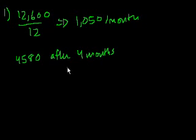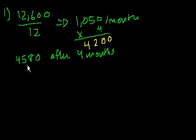By how much was the project over its budget? Let's see how much they should have spent after four months. After four months, they should have spent 1,050 times 4. That's 4,000 plus 200, so $4,200. That's how much they should have spent after four months if they were on budget.